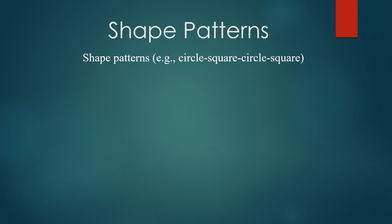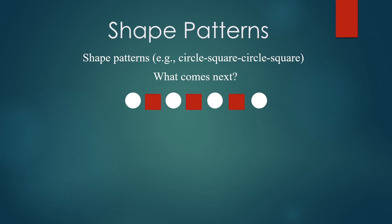Next is shape patterns. Here is an example of a shape pattern: circle, square, circle, square. So here is a white circle, red square, white circle, red square, white circle. What comes next? A square. Next pattern: here you have white circle, yellow circle, and it is getting repeated. So after this white circle, what comes next? Yellow circle, yellow circle. Now here: one square, triangle, triangle, triangle, square, triangle, triangle. So what comes next? A square. You can try making your own shape patterns.